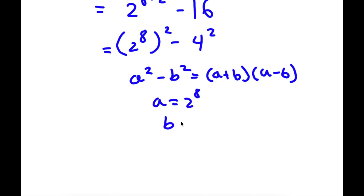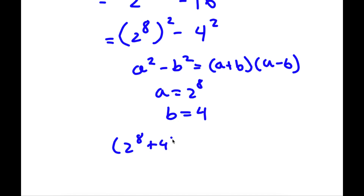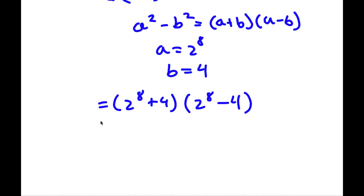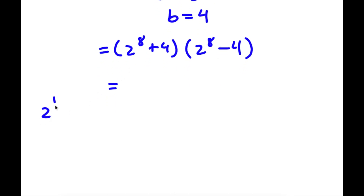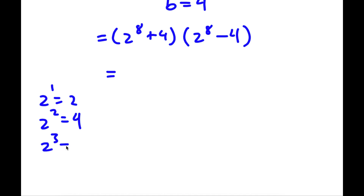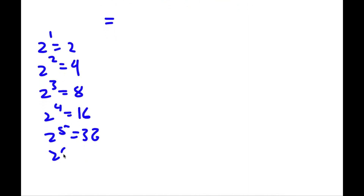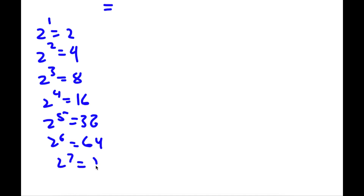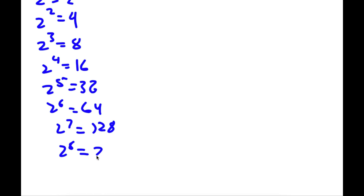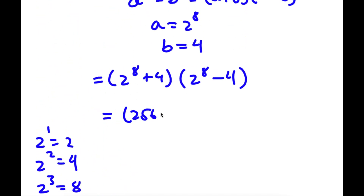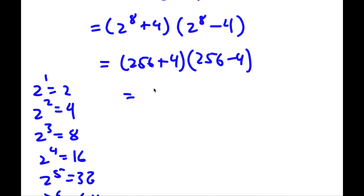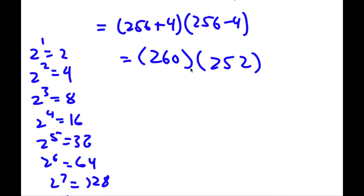So now I have 2 to the power of 8 plus 4 times 2 to the power of 8 minus 4. Now 2 to the power of 8 — let's compute it: 2^1=2, 2^2=4, 2^3=8, 2^4=16, 2^5=32, 2^6=64, 2^7=128, and 2^8 is double of 128, which is 256. So now I have 256 plus 4 times 256 minus 4. Now 256 plus 4 is 260 and 256 minus 4 is 252. So now I have 260 times 252.